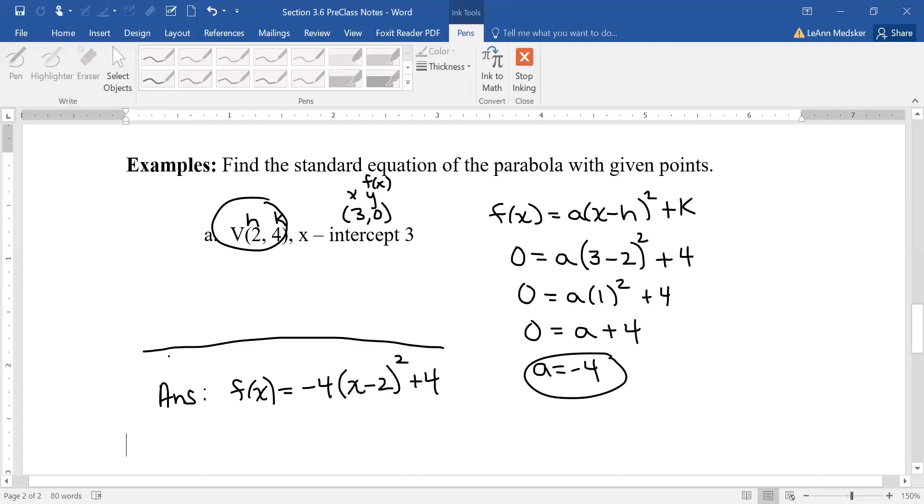So your final answer, you do plug back in some of the numbers, but only a, h and k. So we use that second order pair just to help us find the a.